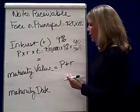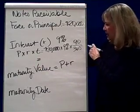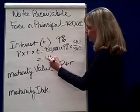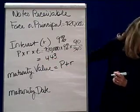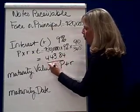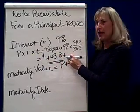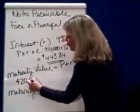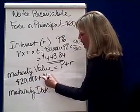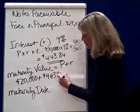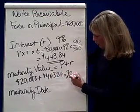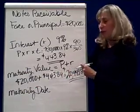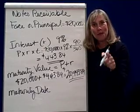That comes out to 20,000 × 9% × 90 ÷ 365. The amount of interest is $443.84, rounded to the nearest cent. The maturity value will be the principal $20,000 plus the interest $443.84, which equals $20,443.84. That's how much you'd owe on this note if you paid it on its due date.